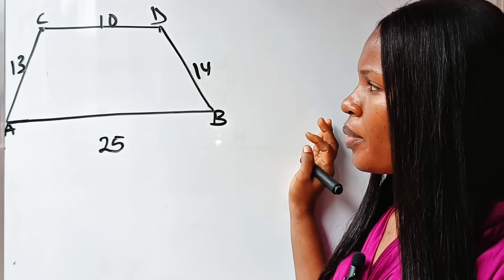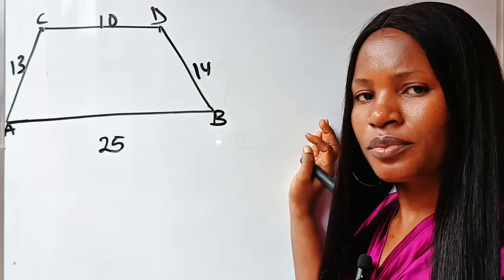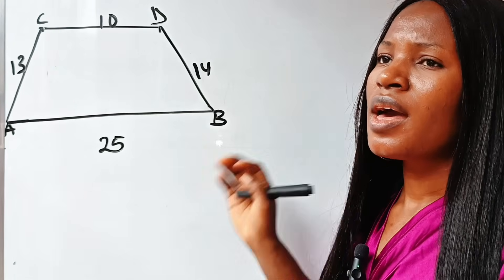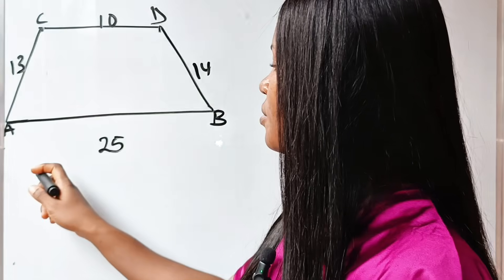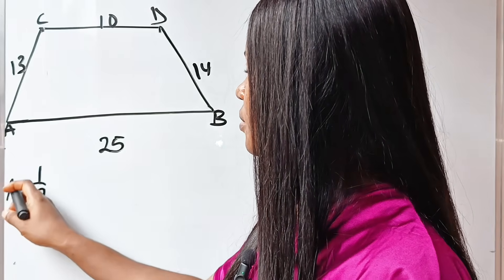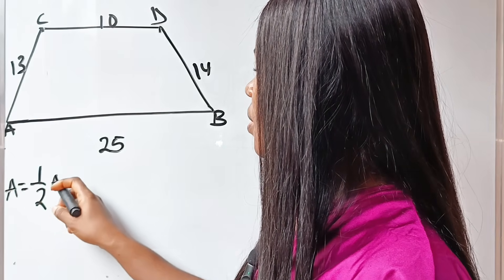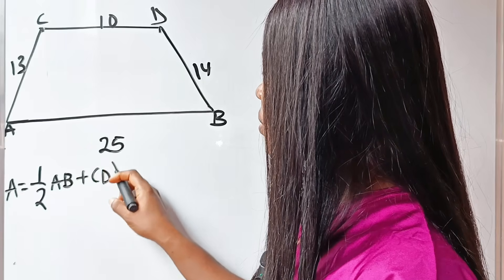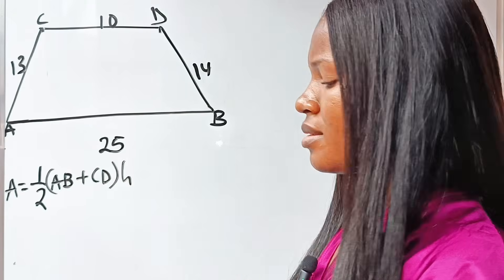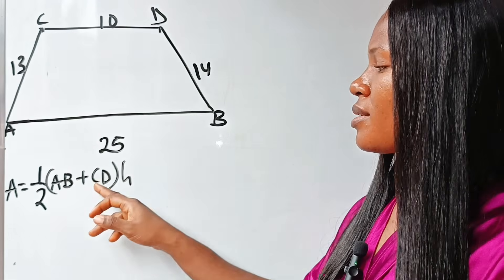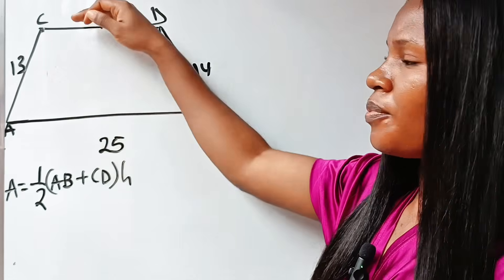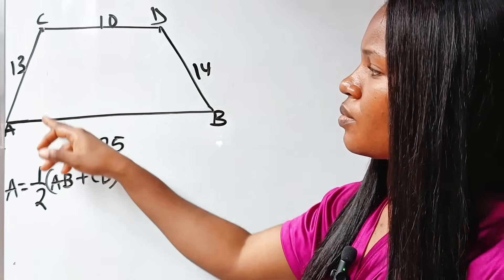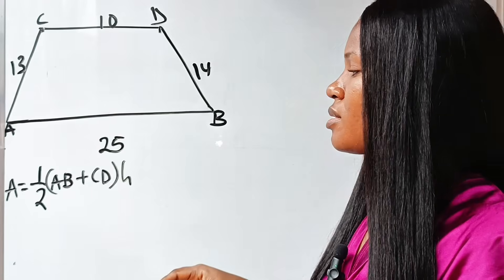This is a trapezium, and the area of a trapezium is half AB plus CD times the height. Now, AB and CD are the parallel sides of the trapezium. But the height — we don't know the value of the height.